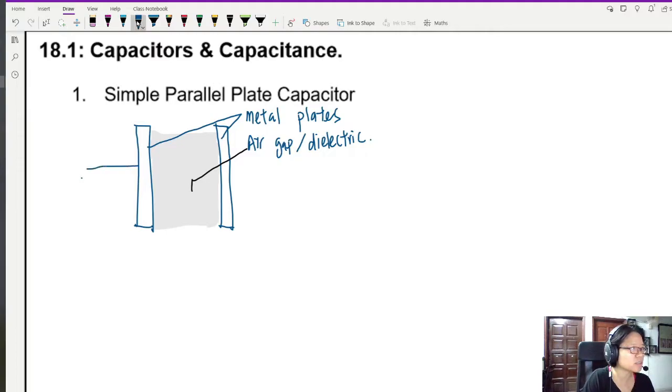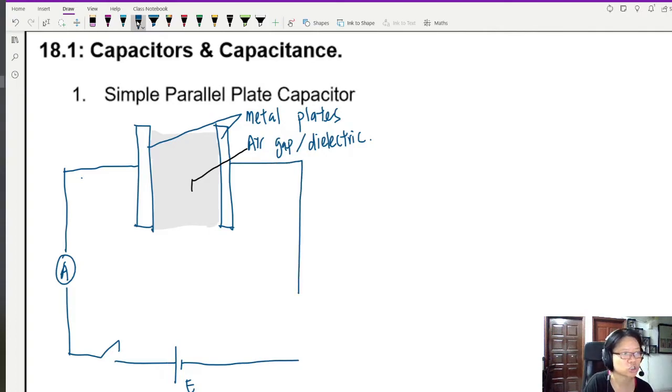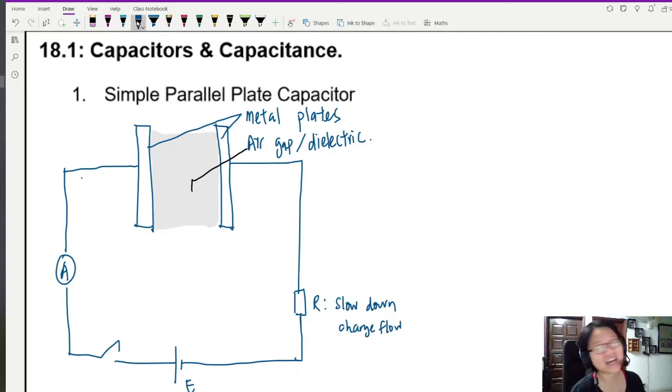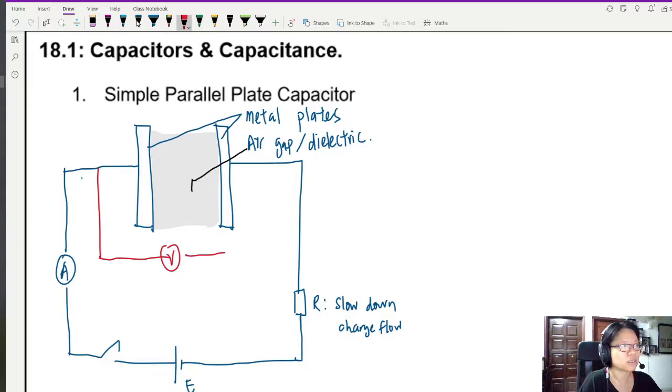We're going to connect this to the power supply. But before we do so, I'm going to add an ammeter there so that I can measure the current flow just to see whether it's constant or not. Connect this to a power supply. Let's say this one is E. And I will connect this one back to a resistor. The purpose of this resistor is not to annoy you or to resist change. This is to slow down the charge flow. And to monitor the potential difference, like all good circuit experiments, we need to measure the current. We need to measure the potential difference. So, I'll connect a voltmeter parallel across the capacitor.